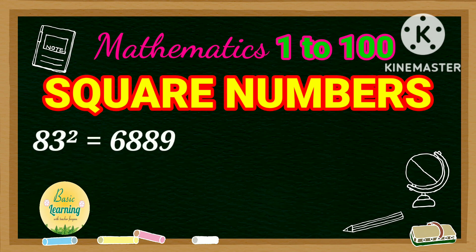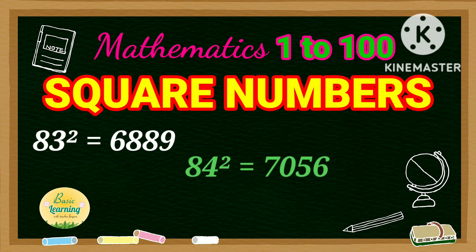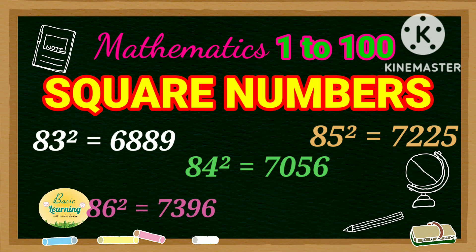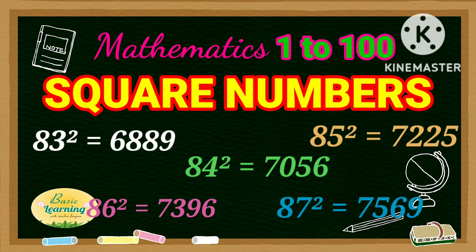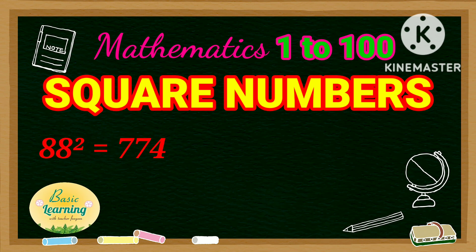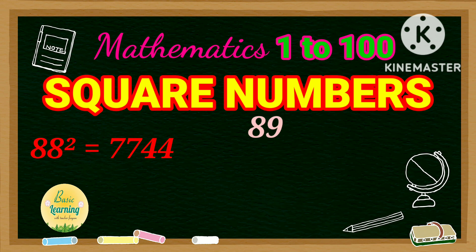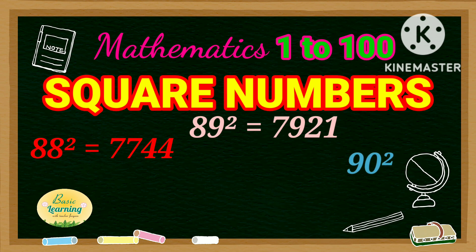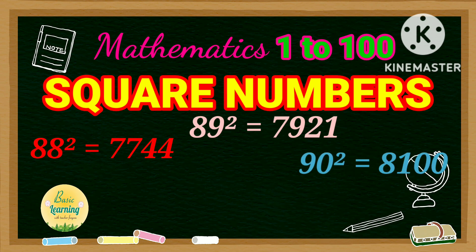Square of 83 is 6,889. Square of 84 is 7,056. Square of 85 is 7,225. Square of 86 is 7,396. Square of 87 is 7,569. Square of 88 is 7,744. Square of 89 is 7,921. Square of 90 is 8,100.